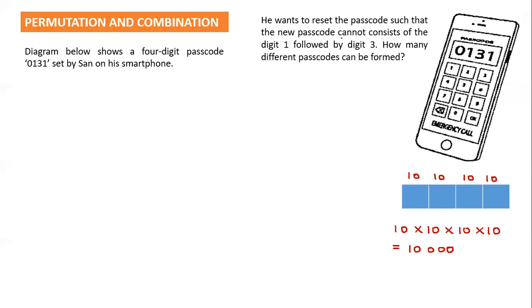The new passcode cannot consist of the digit 1 followed by 3. That means we need to find the number of arrangements that have 1 followed by 3, then subtract that from 10,000. That is our strategy to solve this question.